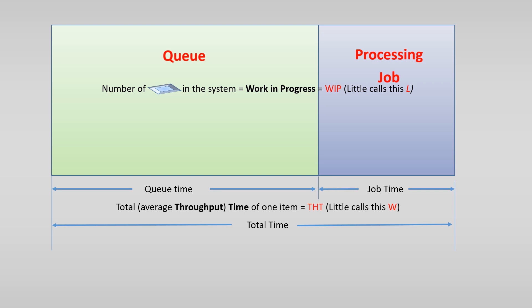We call the time one single product waits in a queue the queuing time. And, it may not come as a surprise, the time it takes for one product to go through the queue and the processing job is called the total time, or total throughput time.